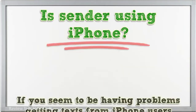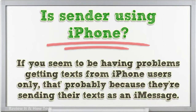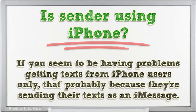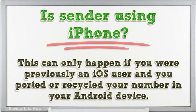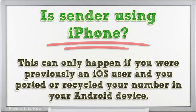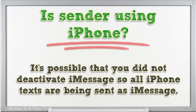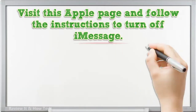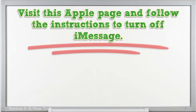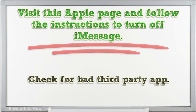Is the sender using iPhone? If you seem to be having problems getting texts from iPhone users only, that's probably because they're sending their texts as an iMessage. This can only happen if you were previously an iOS user and you ported or recycled your number to your Android device. It's possible that you did not deactivate iMessage, so all iPhone texts are being sent as iMessage. Visit the Apple page and follow the instructions to turn off iMessage.